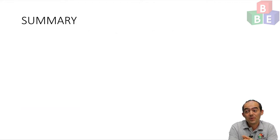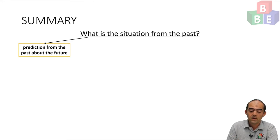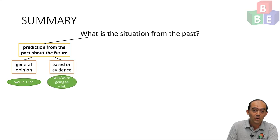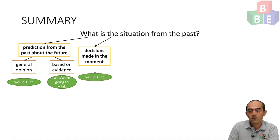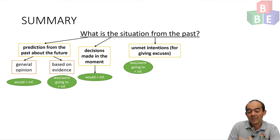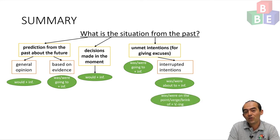We've looked at many ways we can use future in the past, so let's have a quick summary. First, ask yourself: what is the situation from the past? Is it a prediction from the past about the future in the past? Is this prediction based on my general opinion? If yes, use would plus infinitive. But if the prediction is based on evidence, use was or were going to plus infinitive. If the intention was interrupted, use was or were about to plus infinitive, or was/were on the point of, verge of, or brink of, plus verb -ing.